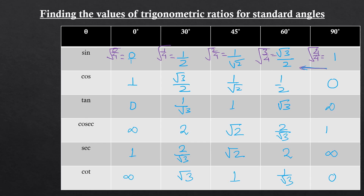Then write cosine in reverse: cos 0° = 1, then √3/2, 1/√2, 1/2, and 0. Tan is sine divided by cosine, and so on. This method is really handy especially in Paper 1 exams and other competitive exams like SAT or ACT where calculators are not allowed. I hope this video helps — please subscribe and share with your friends!